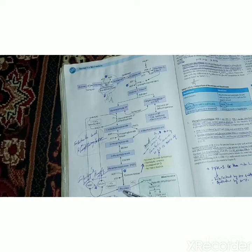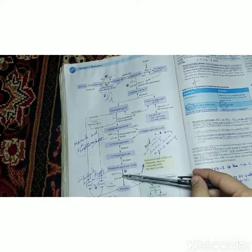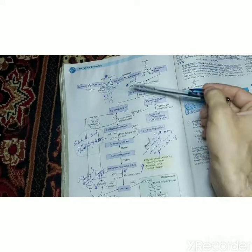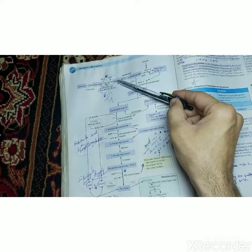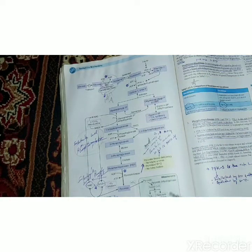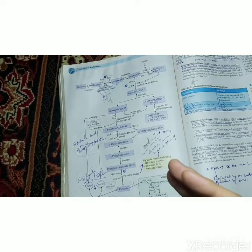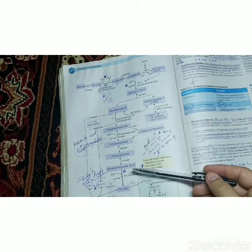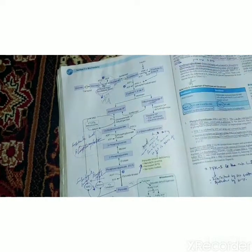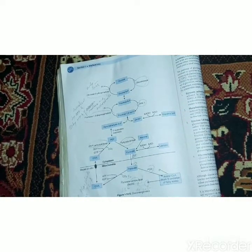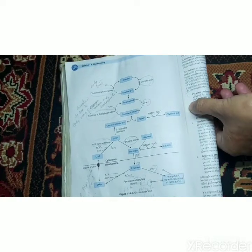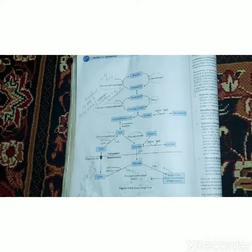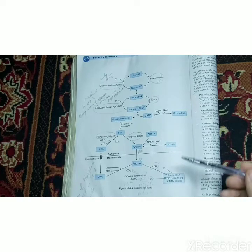Gluconeogenesis basically means reversing this glycolysis pathway to make glucose from pyruvate. But to make glucose from pyruvate, we need to overcome three irreversible steps: from pyruvate to phosphoenolpyruvate, from fructose-1,6-bisphosphate to fructose-6-phosphate, and from glucose-6-phosphate to glucose. This pathway occurs between meals when we are fasting and do not have glucose.